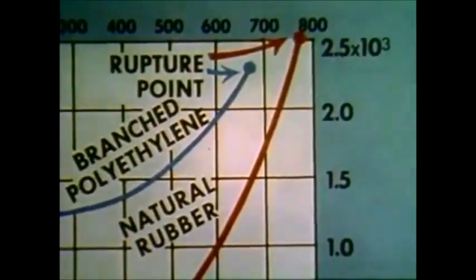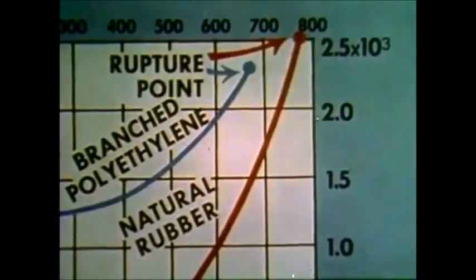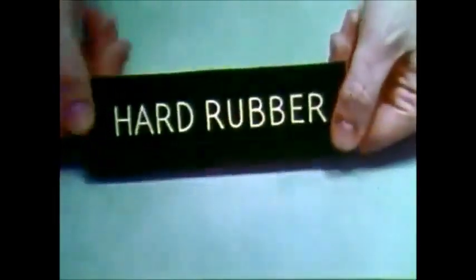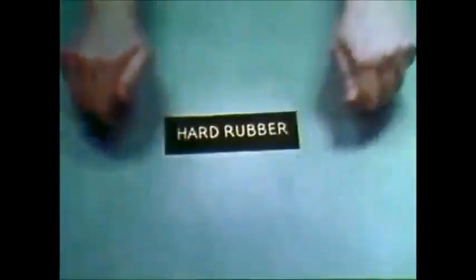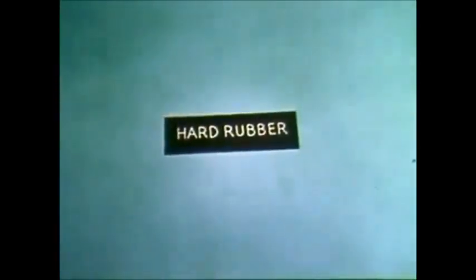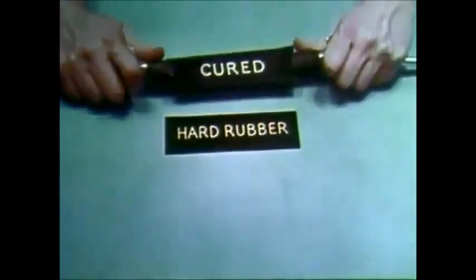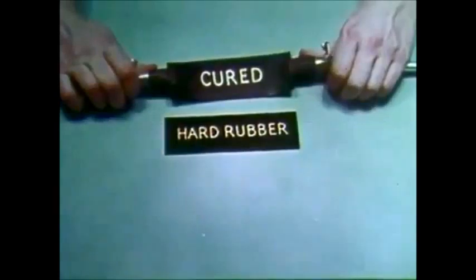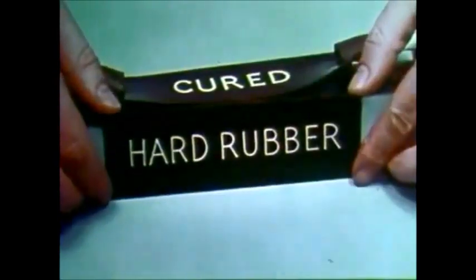Part of this strength is due to the cross-links. However, introducing too many cross-links results in a hard, stiff rubber. All the desirable elastic properties are eliminated. Hard rubber is permanently set during curing and is therefore called a thermosetting material.